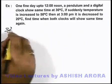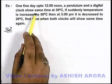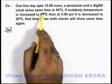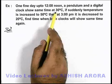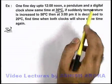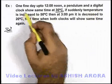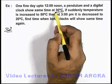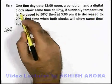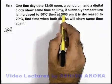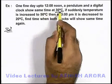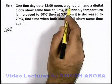In this situation, if we just have a look at the statement — that at thirty degree centigrade the pendulum and digital clock show the same time — that means thirty degree centigrade is the graduation temperature of the pendulum. Because we know that a digital clock does not vary with temperature, we can assume that the digital clock is always showing the accurate time, and the pendulum clock was in sync with the digital clock at thirty degrees, meaning it was showing correct time.